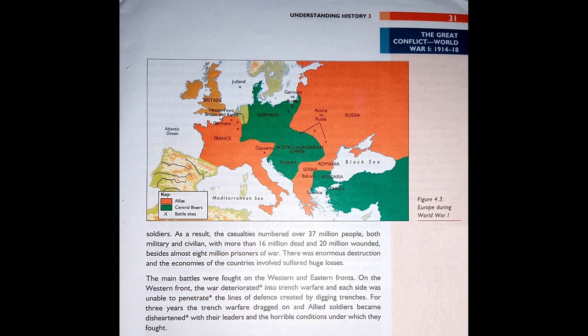As a result, the casualty numbers exceeded 37 million people. A casualty is a person killed or injured in a war or accident, both military and civilian. There were more than 16 million dead and 20 million wounded, besides almost 8 million prisoners of war.